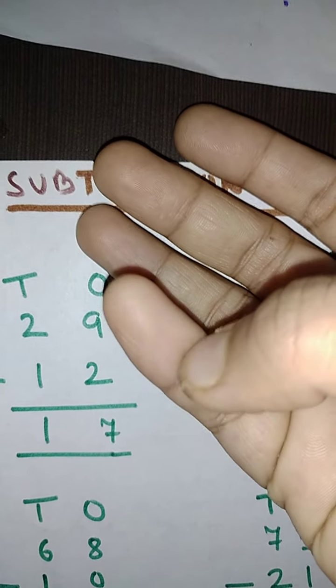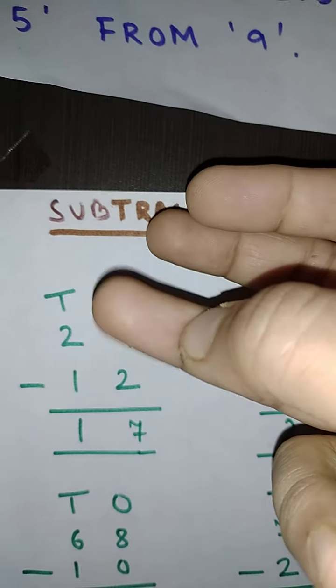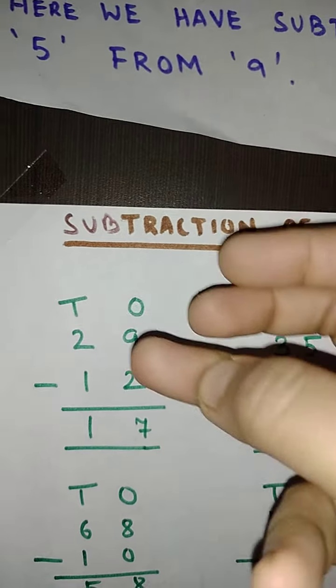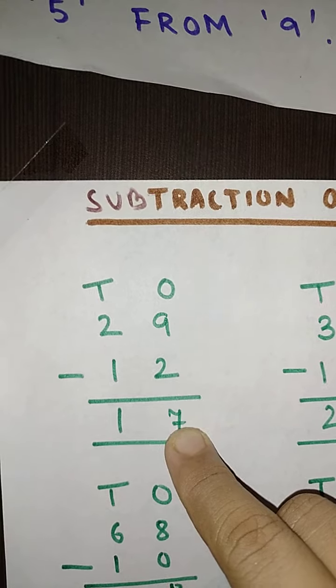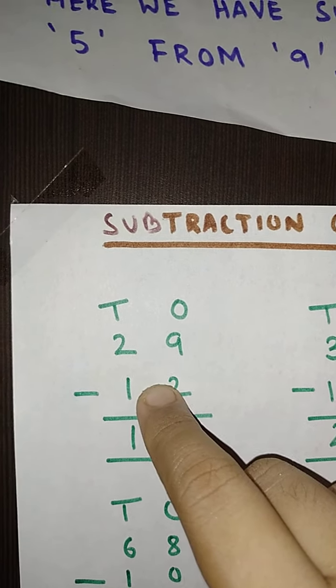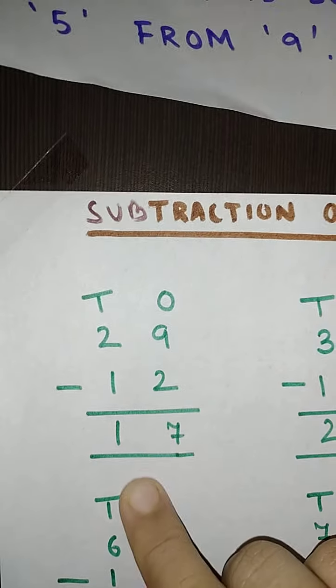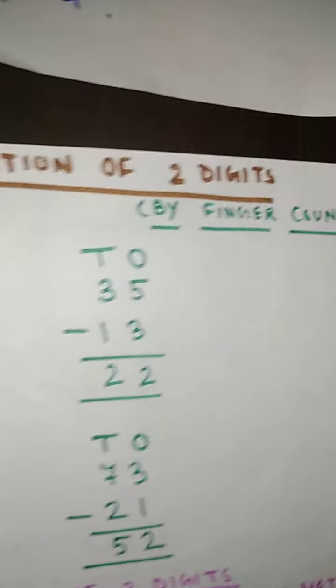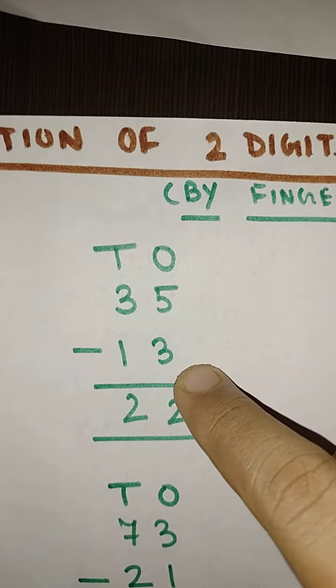So let me start my counting from here. 3, 4, 5, 6, 7, 8, 9. So I am stopping over here and this is my 7. So I have written the answer 7. And here also 2, so 1, 2 is the next number. So my answer is 17.